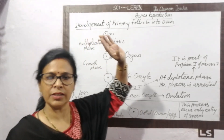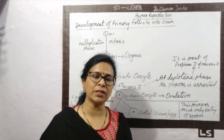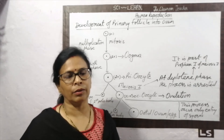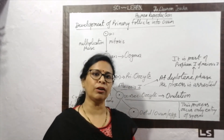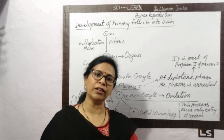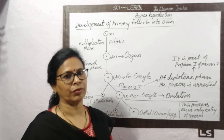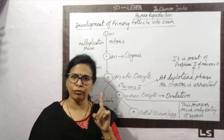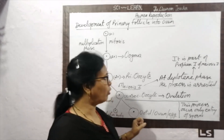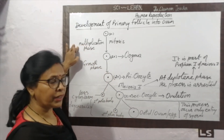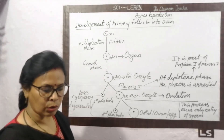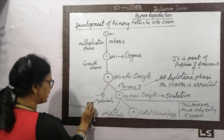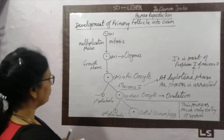To summarize oogenesis: before birth, the female body receives primary follicles from the mother's body. After the 5th month of gestation, nearly 2 million primary follicles remain in the female. At the time of birth, the number reduces to 60 to 80 thousand. Out of every 500, only one primary follicle has the ability to develop into an ovum.